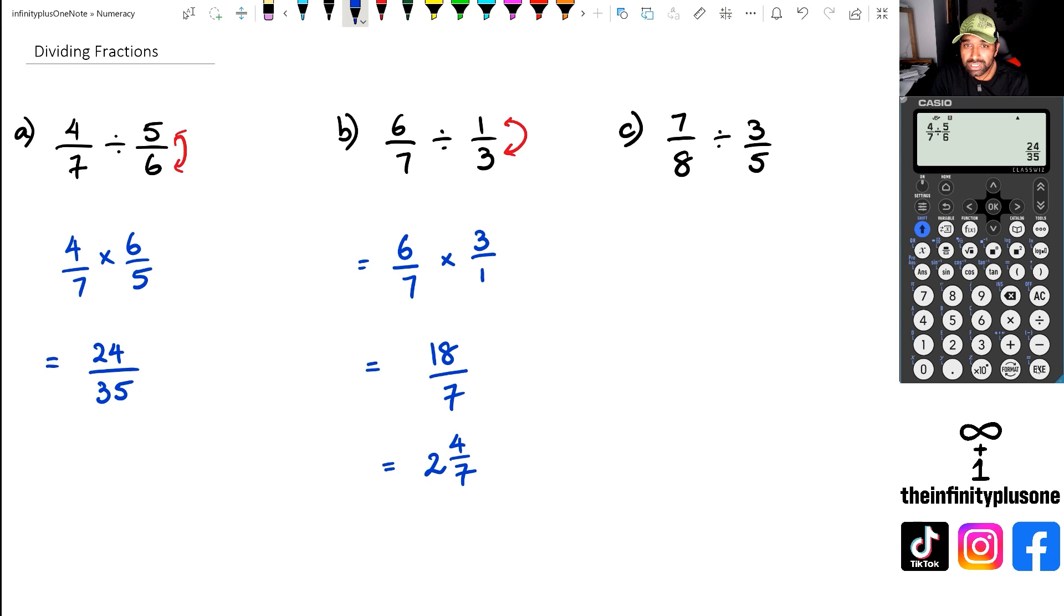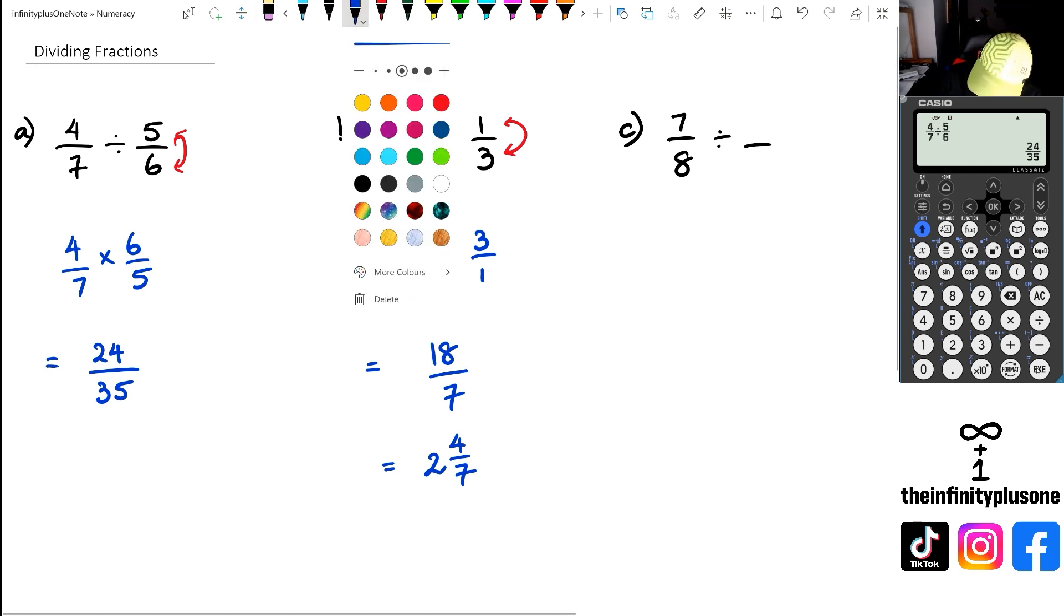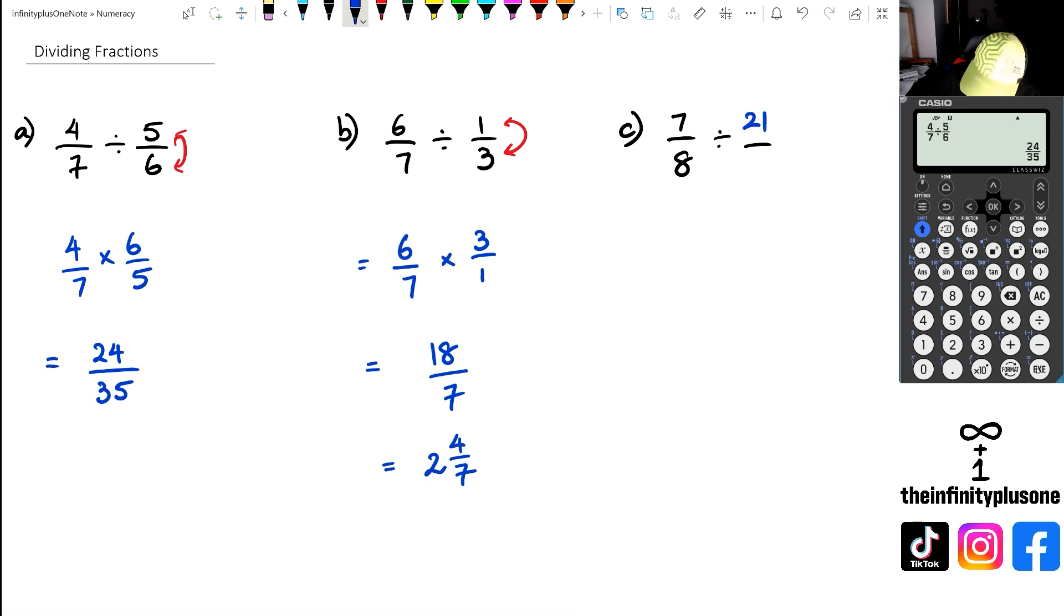Finally, looking at question C here, we've got seven eighths divided by three over five. Now I'm just going to, for this particular question, I'm going to change that three fifths into something else. I'm going to put that as 21. Actually, let's try this. So we're going to make that into 21 over 40. So seven eighths divided by 21 over 40.